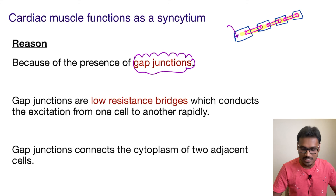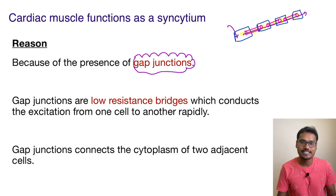So whenever any impulse arrives at the first cell, because their cytoplasms are connected, the impulse is going to transmit faster. If it is transmitted faster, the advantage is that all the cells can act at the same time and they can contract simultaneously.